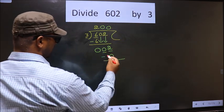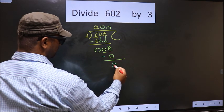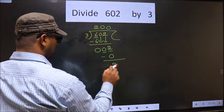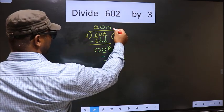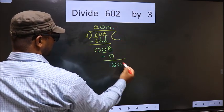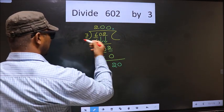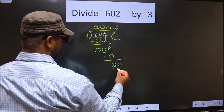Now you subtract: 2 minus 0 is 2. Over here we did not bring any number down, and 2 is smaller than 3, so now you can put a dot and take 0 here. Here, 20. A number close to 20 in the 3 table is 3 times 6 equals 18.